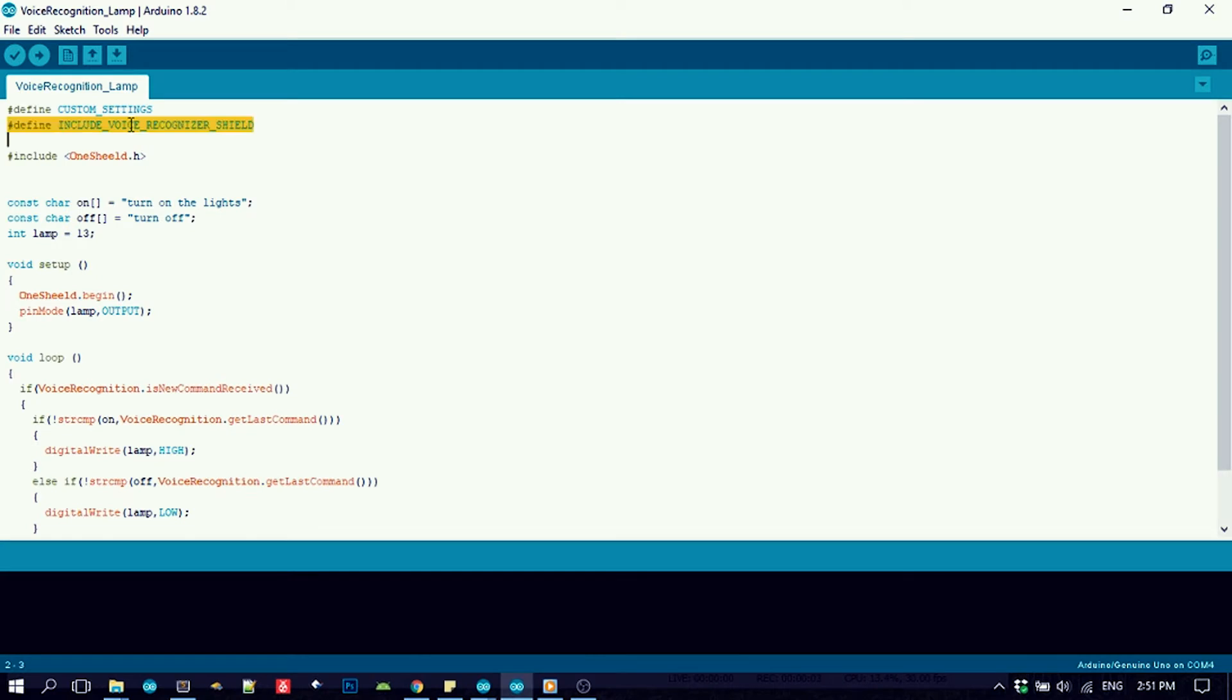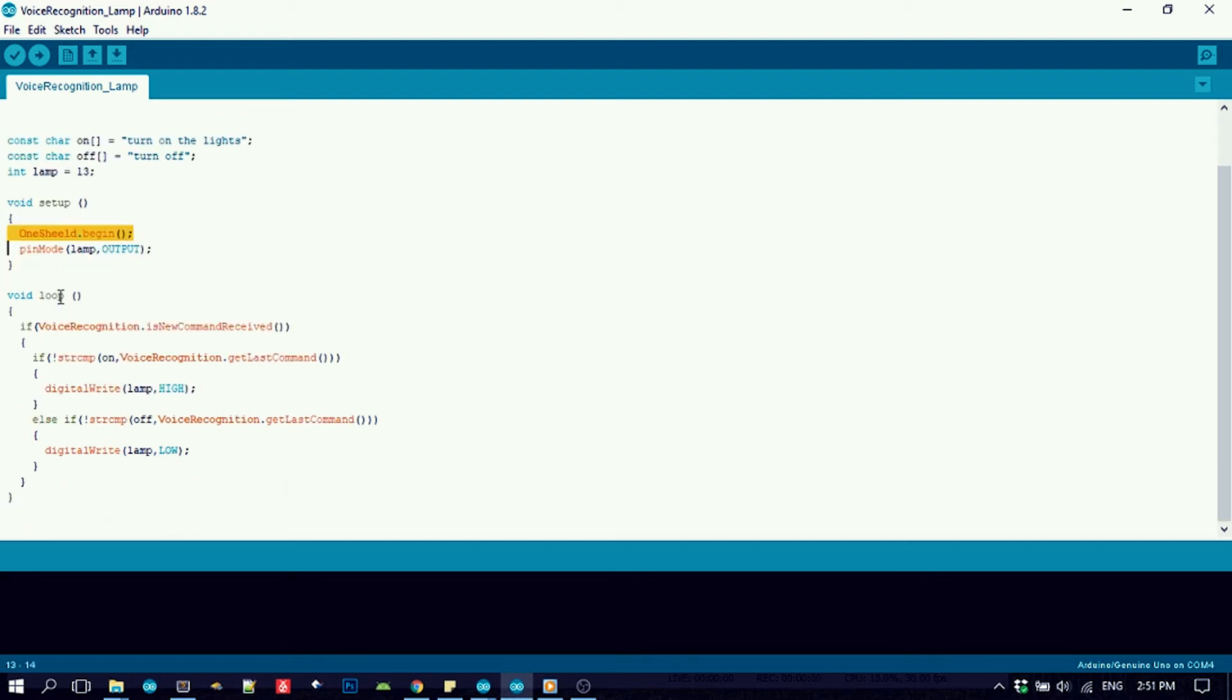For the sketch, I've included the voice recognition shield and the OneShield library. In the setup, I've called the OneShield.begin function to initialize the library. In the loop,